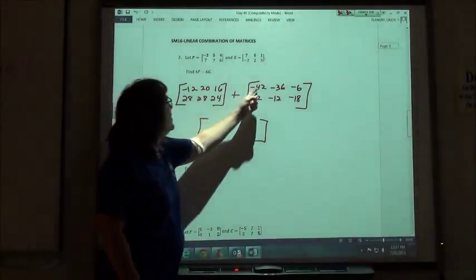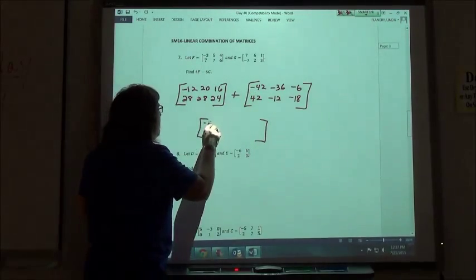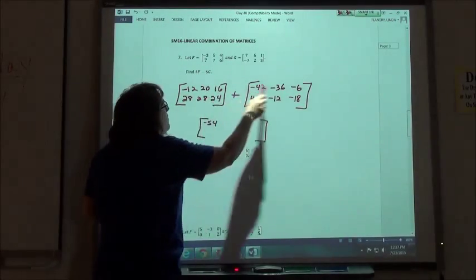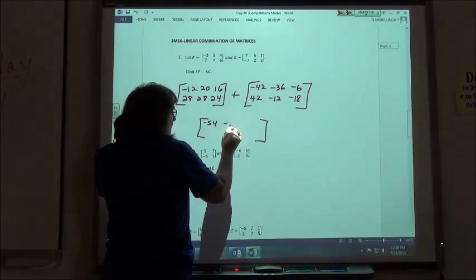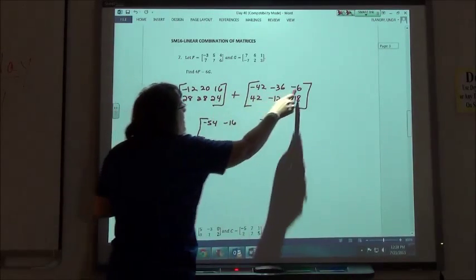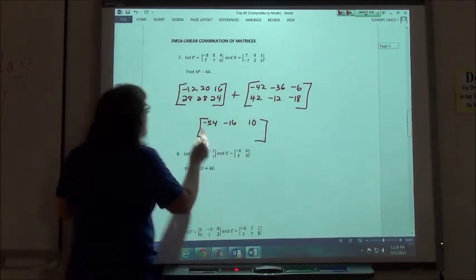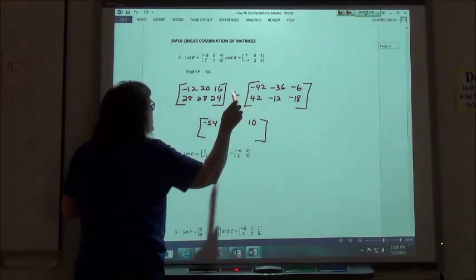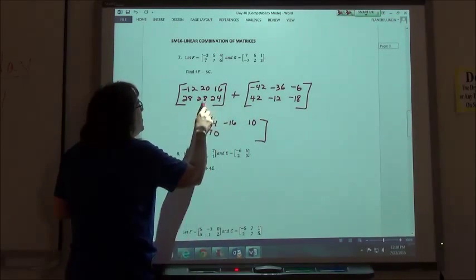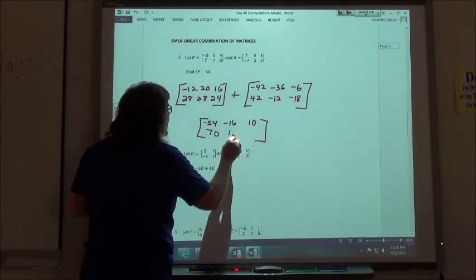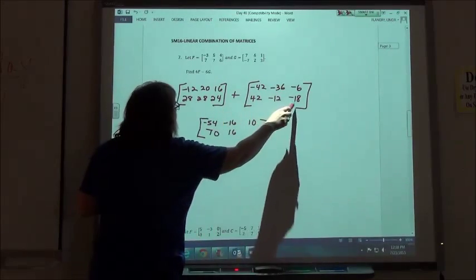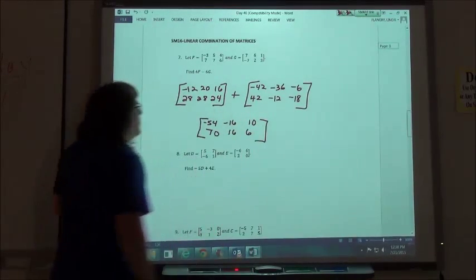So negative 12 plus negative 42 would be negative 54, 20 plus negative 36 would be negative 16, 16 minus 6 is positive 10, 28 plus 42 must be about 70, 28 minus 12 would be 16, and 24 minus 18 would be 6.